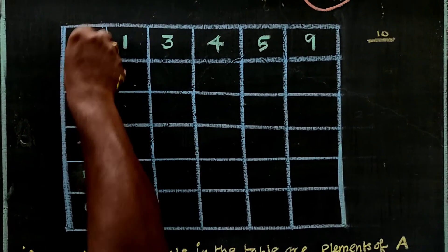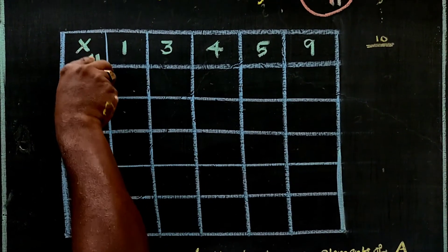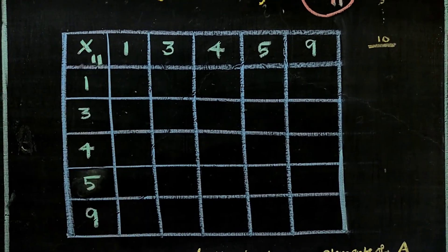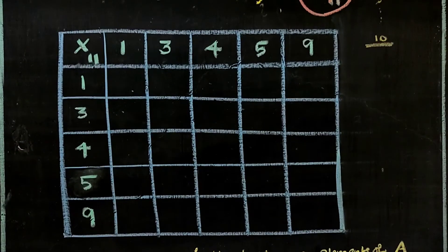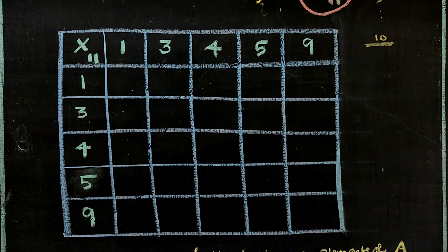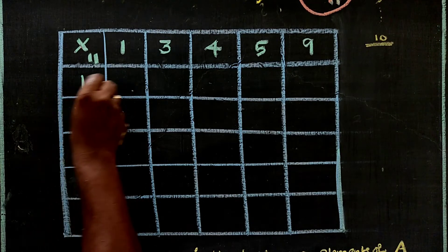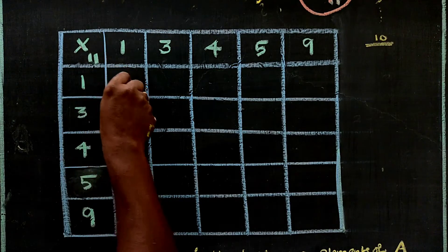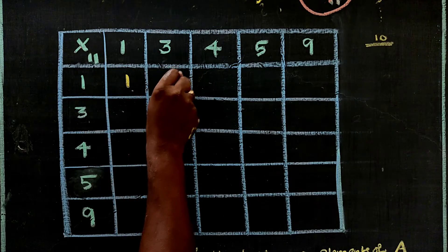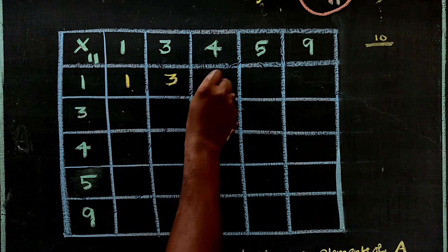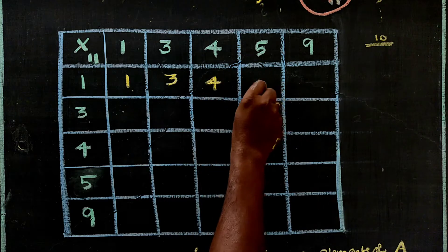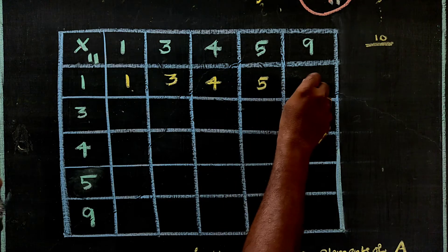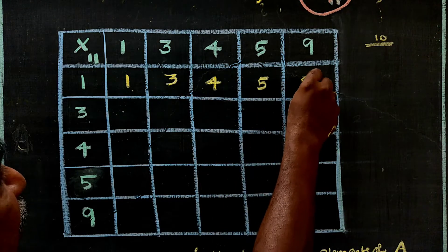Now let's build the multiplication table mod 11. Taking 1 first and multiplying with each element: 1×1=1, 1×3=3, 1×4=4, 1×5=5, 1×9=9.